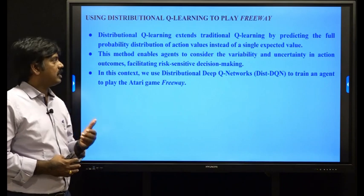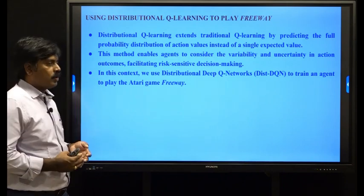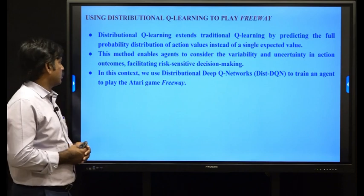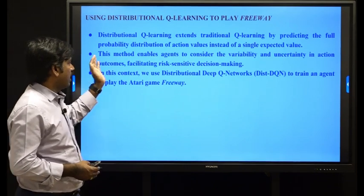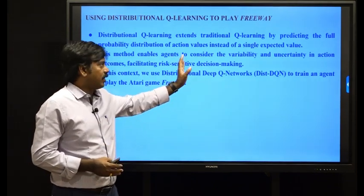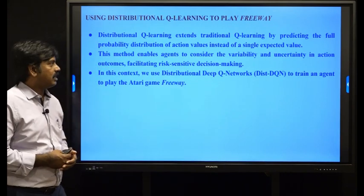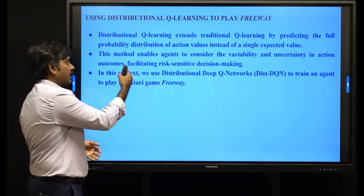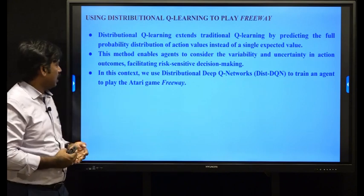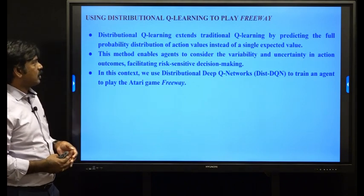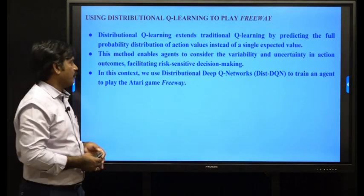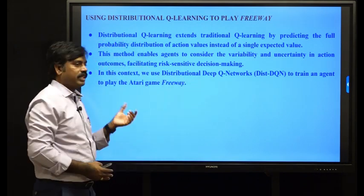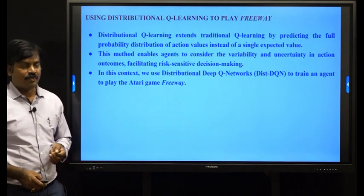Traditional Q-learning expects single values, while distributional Q-learning expects distributional values. This model enables the agent to consider the variability and uncertainty in action outcomes. It also addresses risk-sensitive decision making. In this context, we use a distributional deep Q-network to train an agent to play the Atari game Freeway.